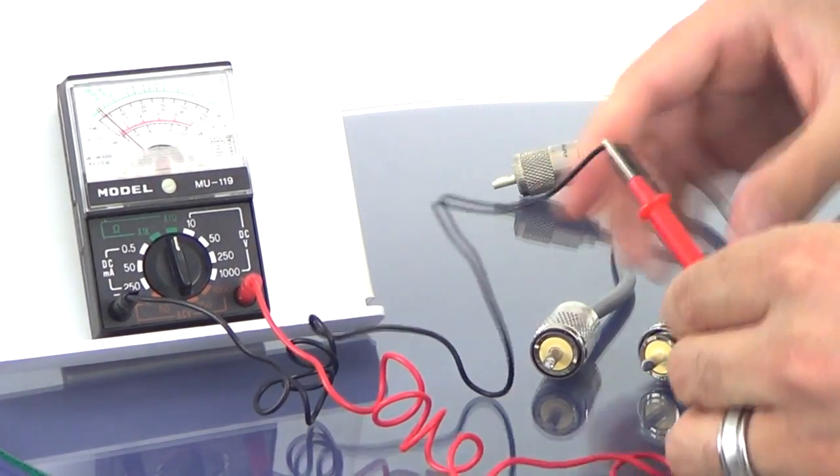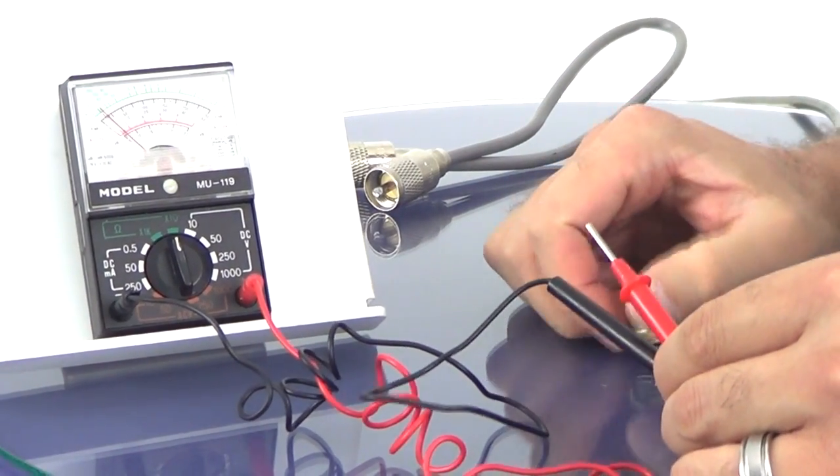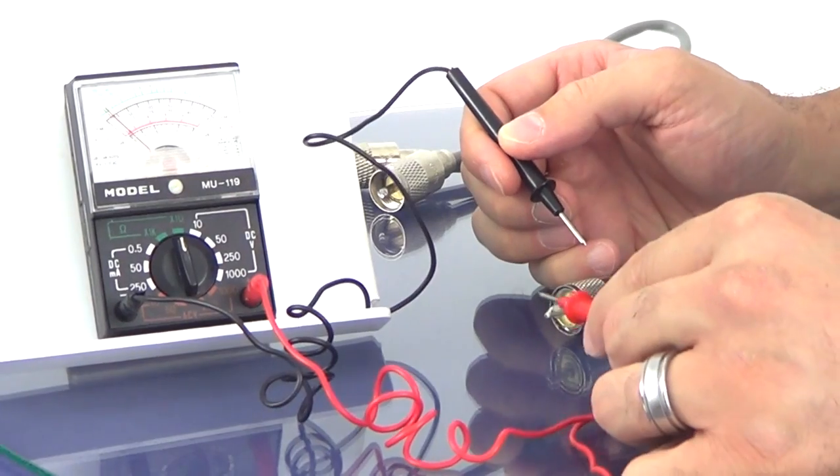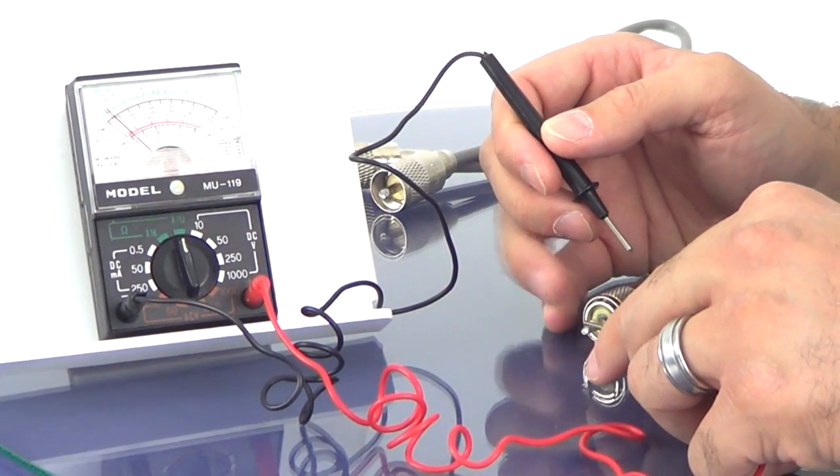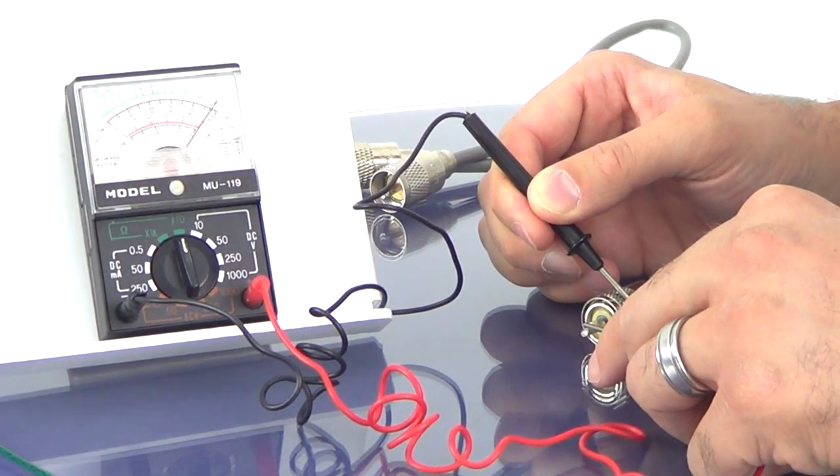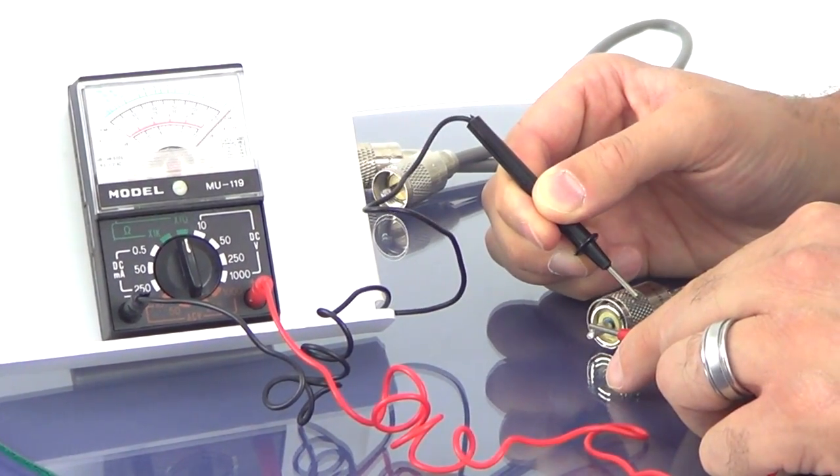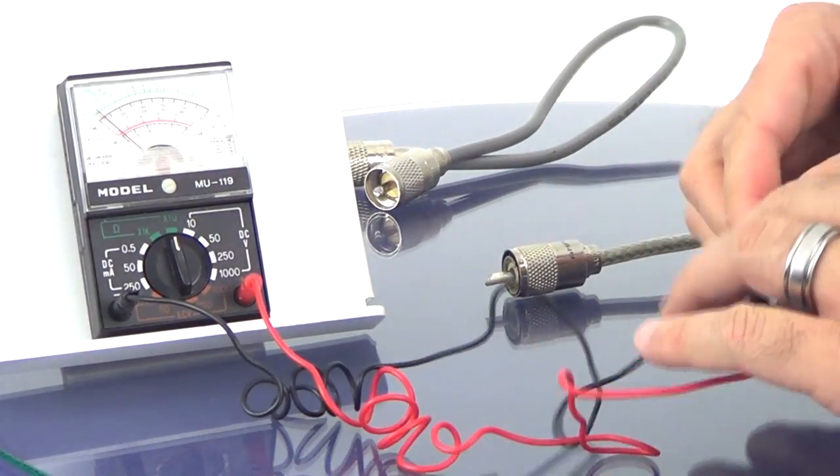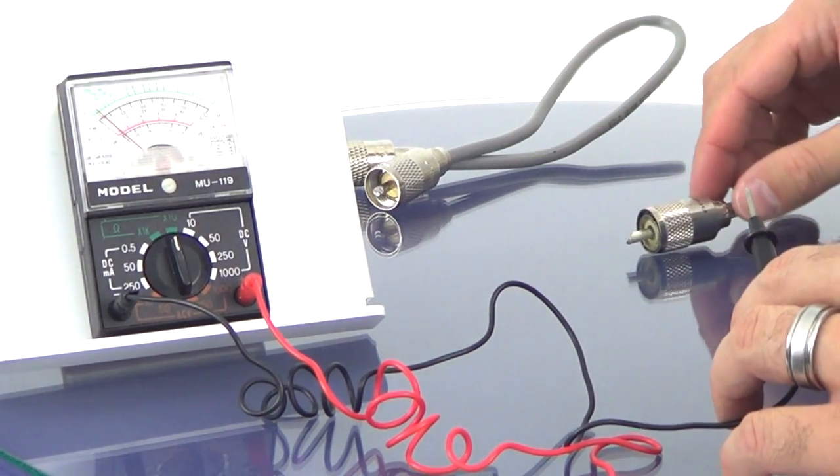Now if there were a problem you would get a reaction like we do with our shorted cable where if I touch the center conductor and the shield I get a reaction out of the multimeter that should not happen. And that's because this cable is shorted out. If that does happen for you, you've got a bad cable.